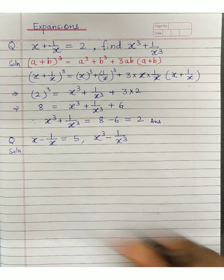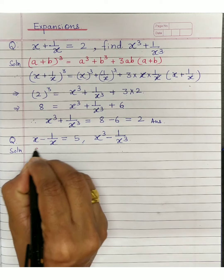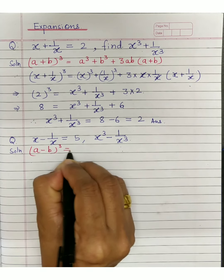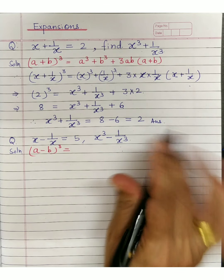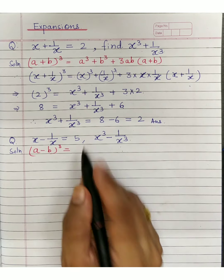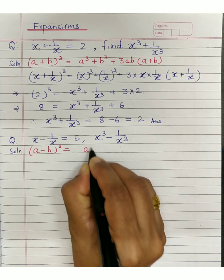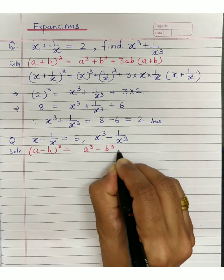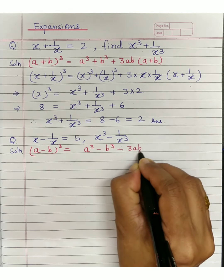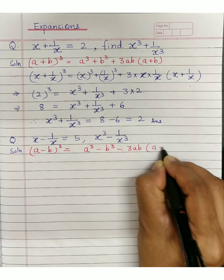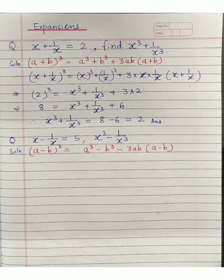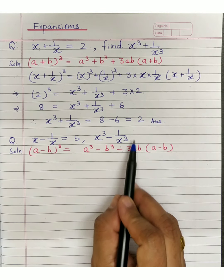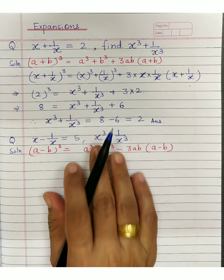Write down the formula while saying it again and again — this way the formula gets learned while solving. The shortcut form is: a cube minus b cube minus 3ab bracket a minus b. Think about why we use this form rather than the fully expanded a cube minus 3a squared b plus 3ab squared minus b cube.